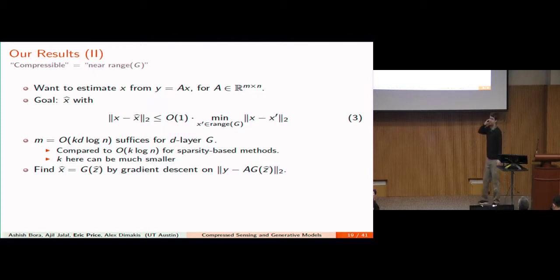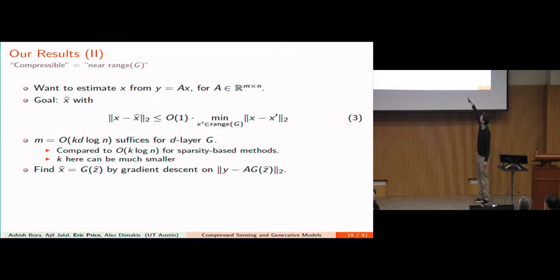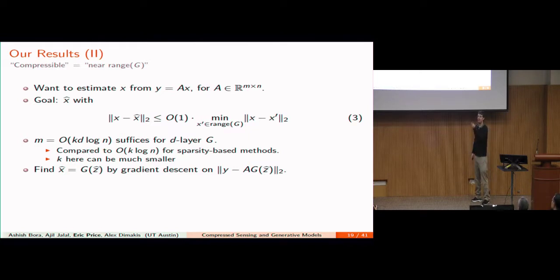The second result is more general — it applies to any Lipschitz function, not just ReLU-based networks, and is logarithmic in the Lipschitz constant. For a neural network with D layers of polynomially bounded weights, each layer has poly-N Lipschitzness, giving at most N^D overall. Log of N^D is D·log(N), so morally k·log(L) and k·D·log(N) are the same. Although k here is hopefully much smaller than in standard compressed sensing because the representation is much more carefully calibrated to the distribution of interest.